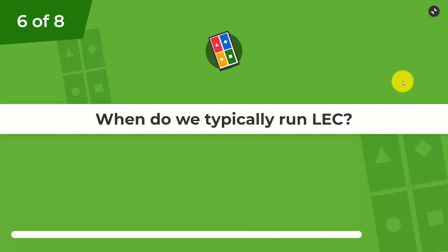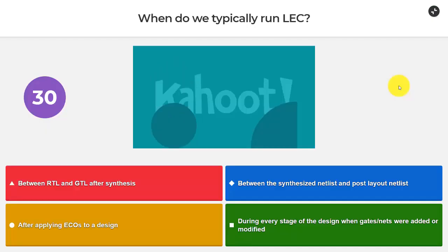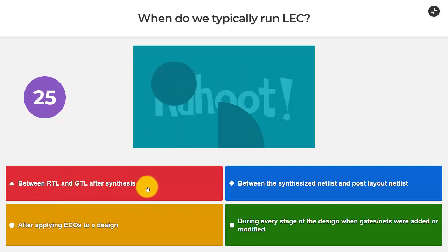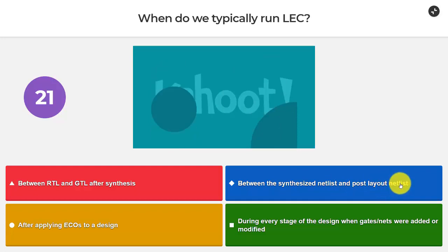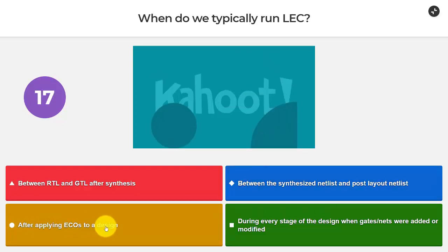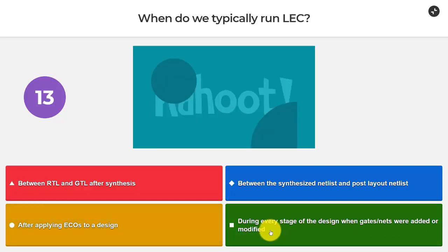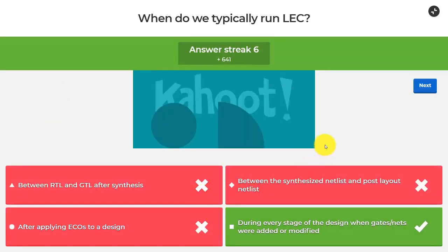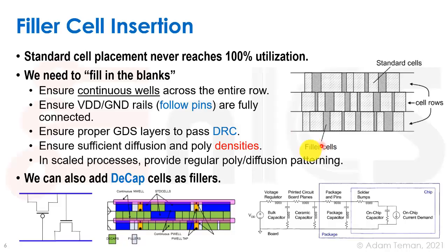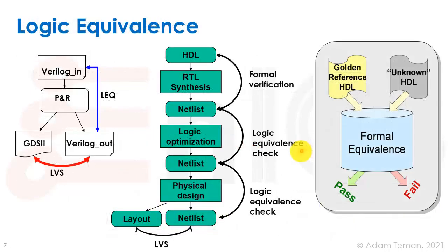Question number six: when do we typically run LEC, logic equivalence check? Between RTL and gate level following synthesis, between the synthesized netlist and post-layout netlist after applying ECOs, or during every stage of the design when gates or nets were added or modified? The answer is going to be the last one — during every stage — because we have to do each of these.